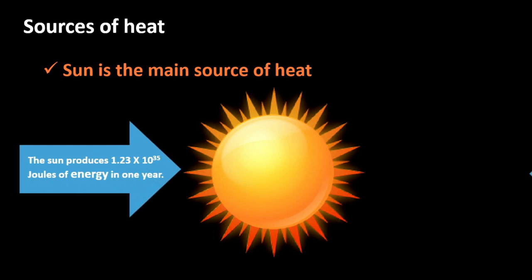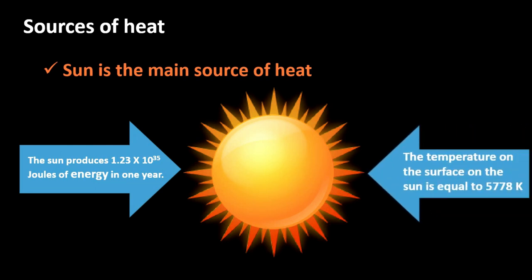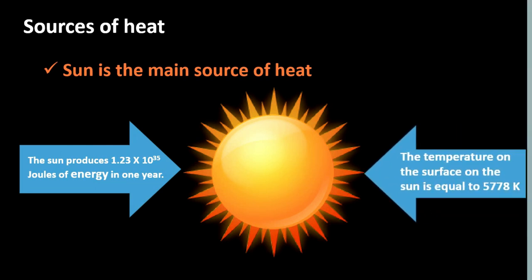This is for your information that the sun produces 1.23 multiplied by 10 to the power 35 joules of energy in one year. Sun ek saal mein 1.23 multiplied by 10 to the power 35 joules energy produce karta hai. And the temperature on the surface of the sun is equal to 5,778 Kelvin.